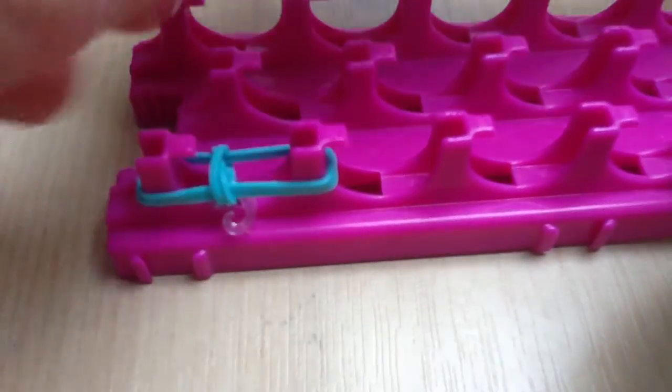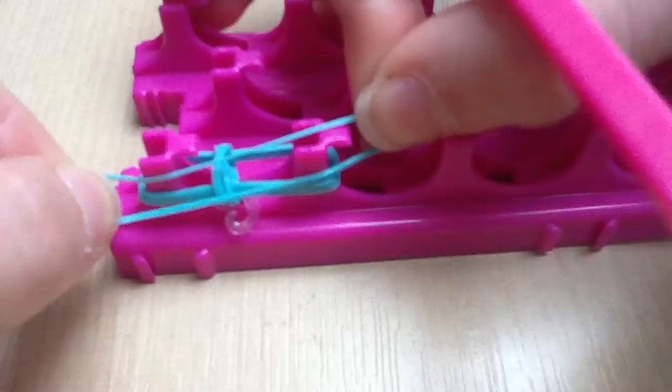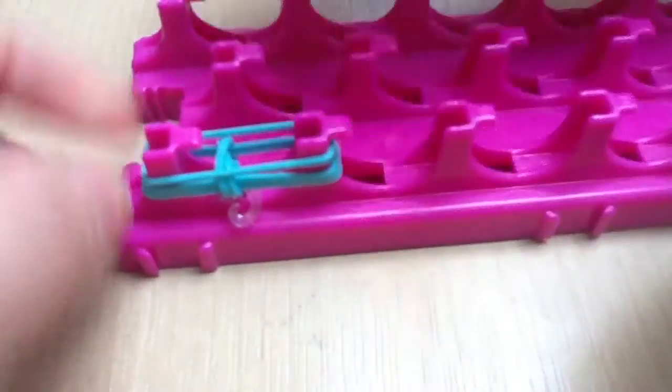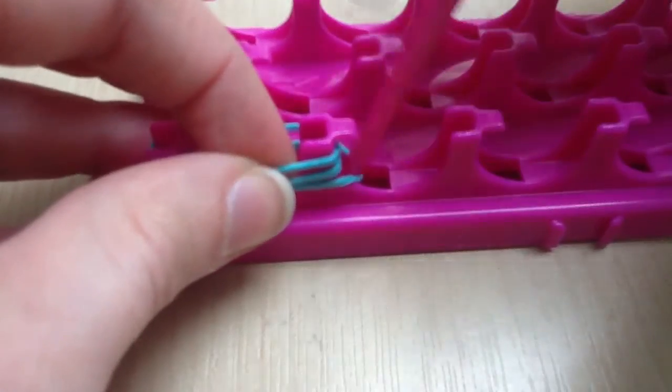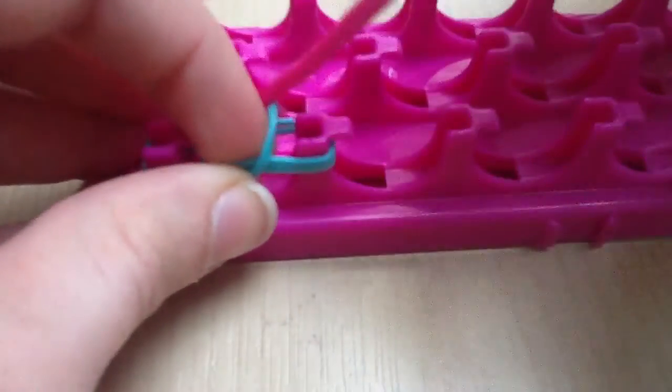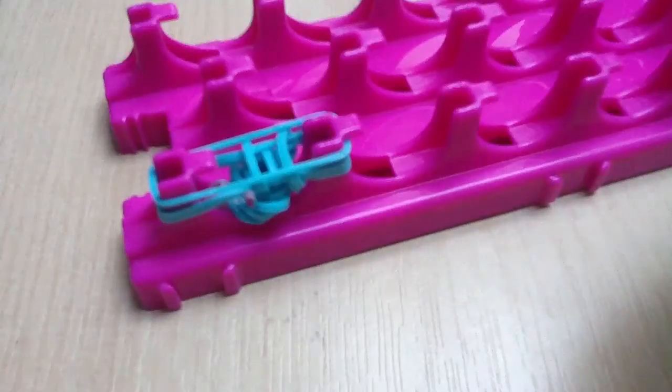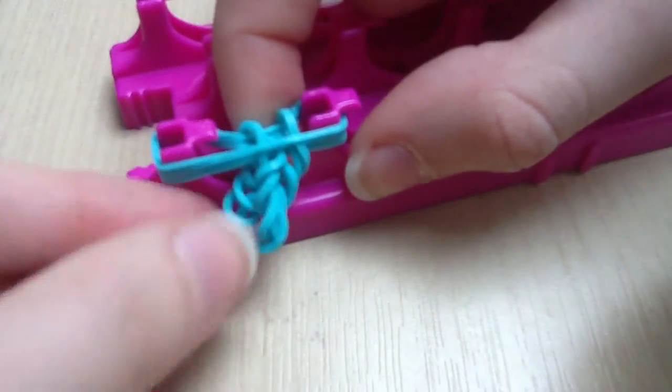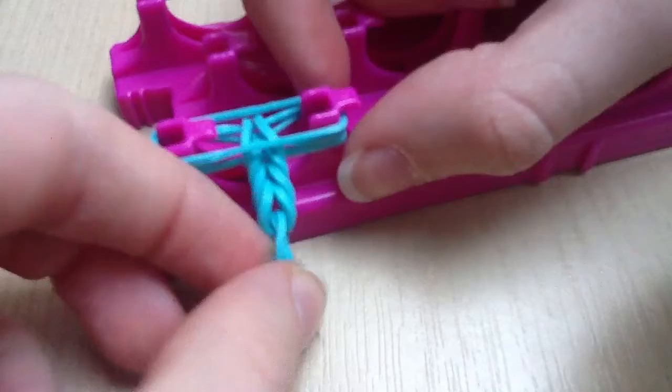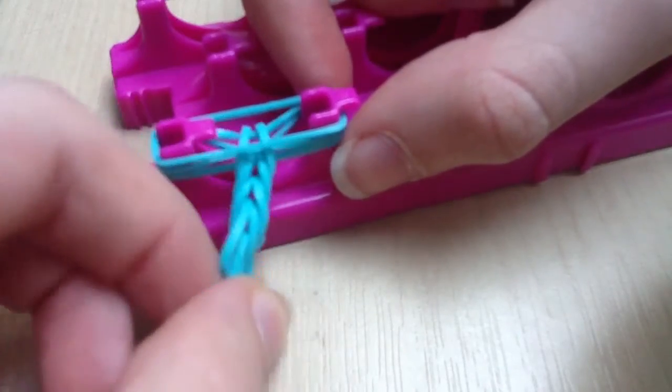Continue adding the different colored bands onto the top and putting the bottom one over. Make sure that every so often you push it down and then pull. As you can see, your fishtail is already coming together.